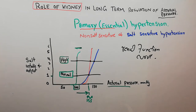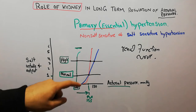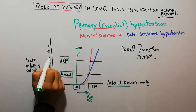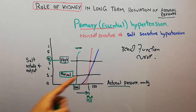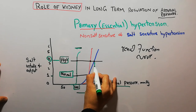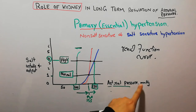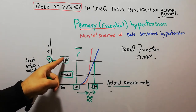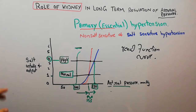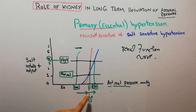If we increase the salt intake to around four times normal, we can differentiate the two types of primary essential hypertension. Both curves shifted right at normal salt intake, but the salt-sensitive hypertension increases further — shifting more to the right, up to around 150 mmHg — whereas the non-salt-sensitive hypertension moves only slightly and remains close to its original elevated point.